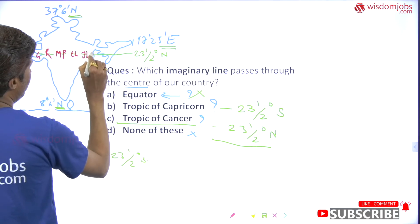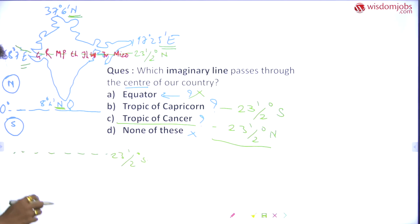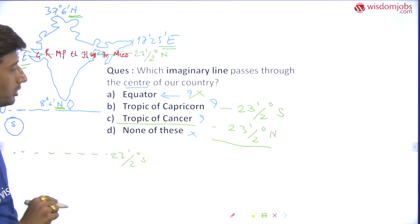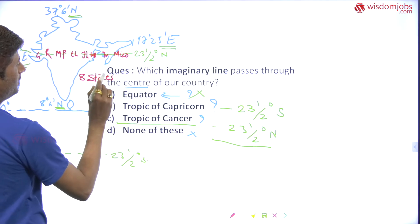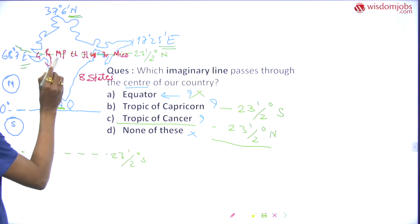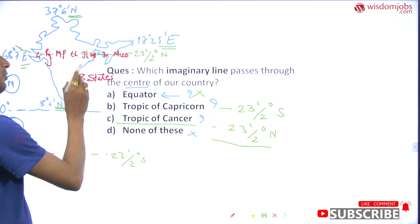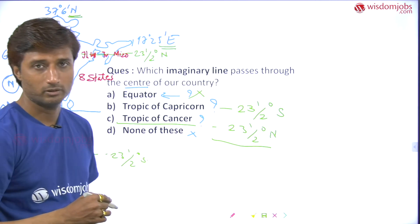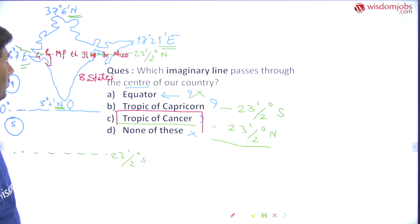The Tropic of Cancer passes through eight states. From west to east: Gujarat (1), Rajasthan (2), Madhya Pradesh (3), Chhattisgarh (4), Jharkhand (5), West Bengal (6), Tripura (7), and Mizoram (8). So the Tropic of Cancer passes through eight states of India.